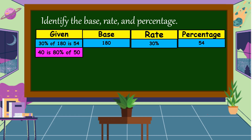Next example: 40 is 80% of 50. What is the base? The base is 50. How about the rate? Rate is a number having a percent symbol, so the rate is 80%. And the percentage is 40.